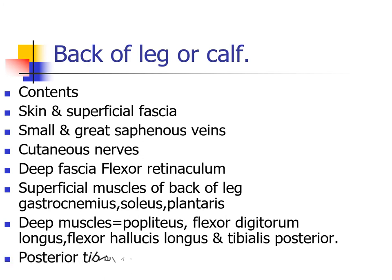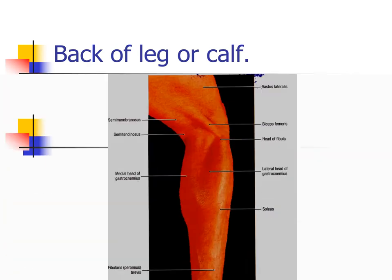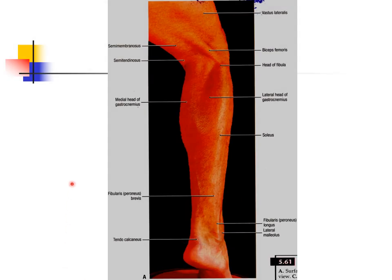The back of calf includes the posterior tibial vessels and tibial nerve. These are the surface landmarks of the back of calf muscles: the lateral head of gastrocnemius, the medial head of gastrocnemius, the soleus, and the largest tendon named tendo calcaneum or tendo achilles. You have already learned about the fibular compartment and peroneus longus and brevis muscles.